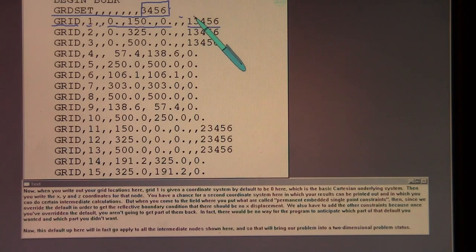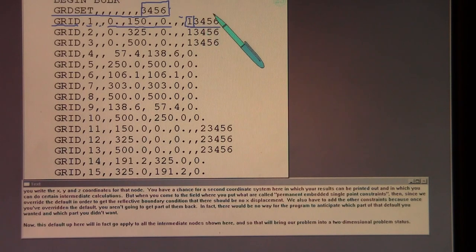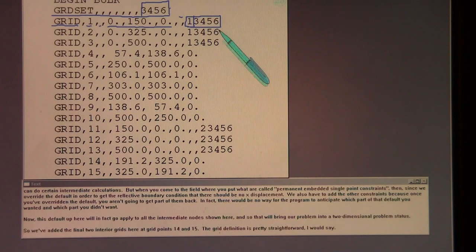But when you come to the field where you put what are called permanent embedded single point constraints, then since we override the default in order to get the reflective boundary condition that there should be no x displacement, we also have to add the other constraints, because once you've overridden the default, you aren't going to get part of them back. In fact, there would be no way for the program to anticipate which part of that default you wanted and which part you didn't want.